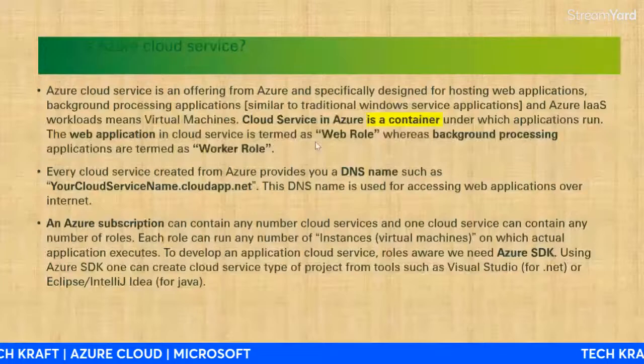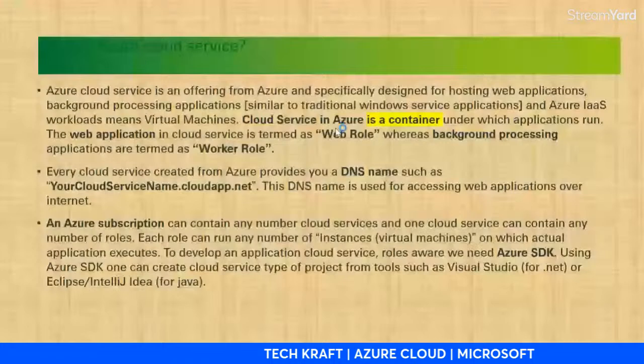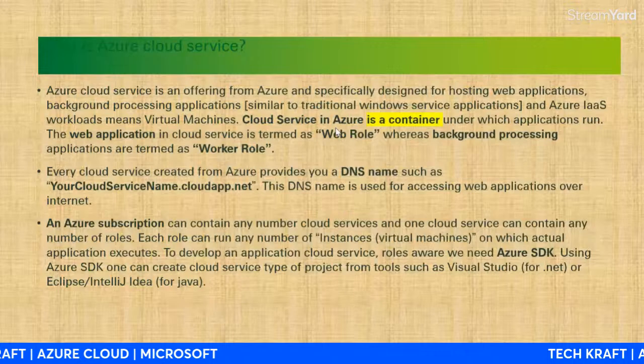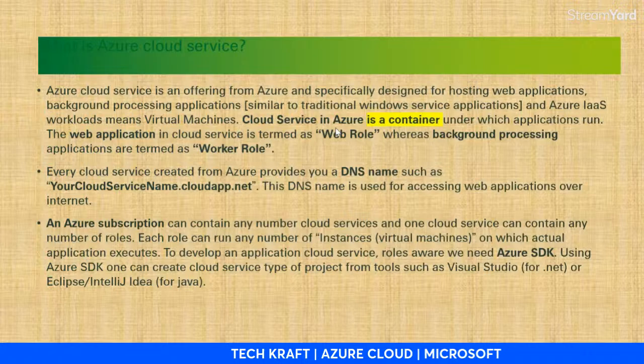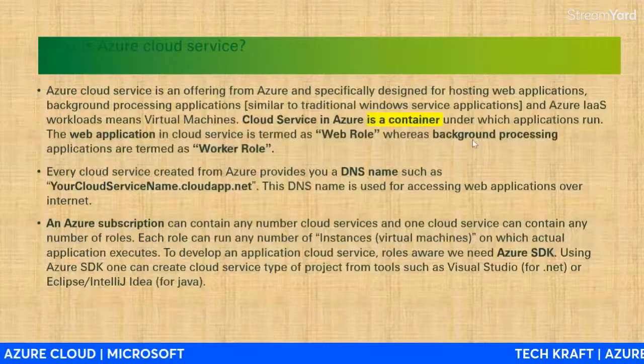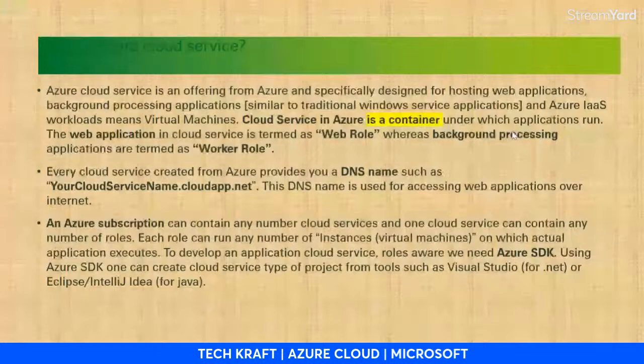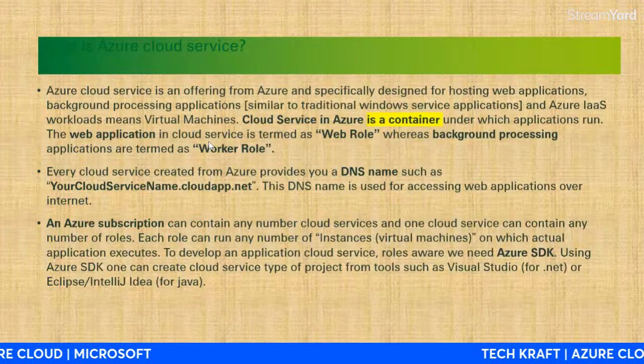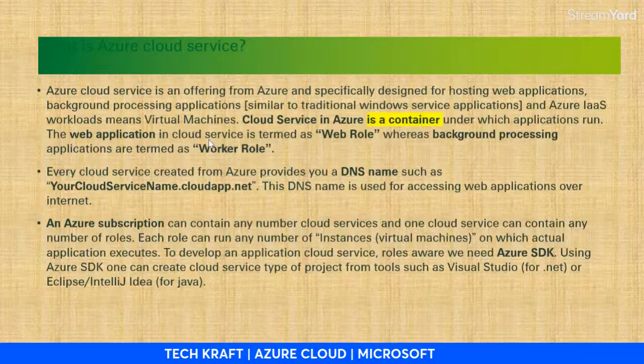The web role, also called front-end, is used for deploying and managing the web application. If you want to change buttons or key features of a resource, you use the web role. If you want to change background databases, storage requirements, or scalability resources, you use background processing applications, also called worker roles.